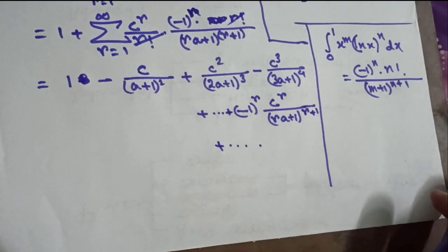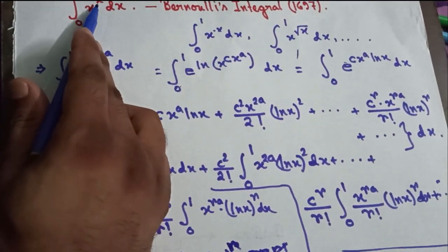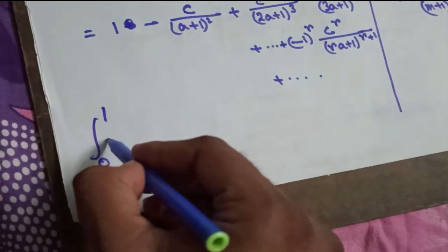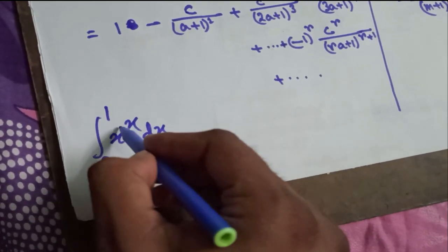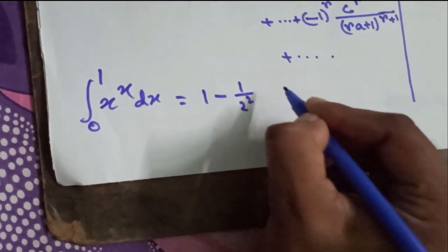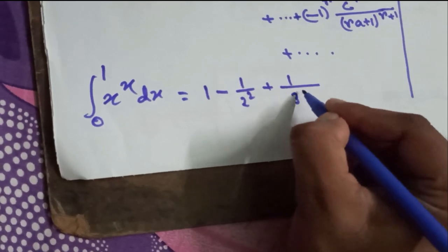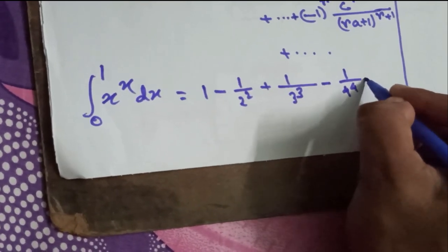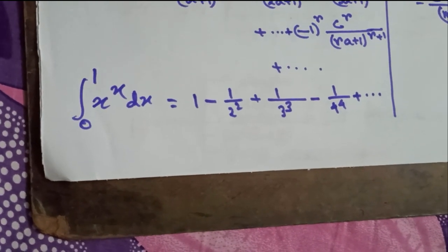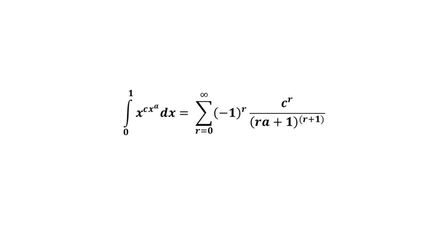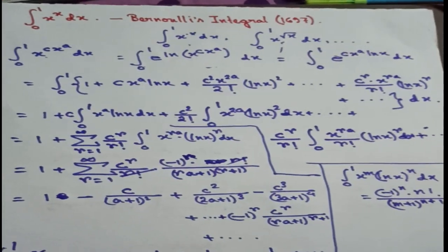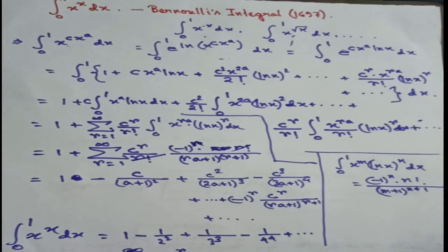For our desired integral from 0 to 1 of x^x dx, we set c = 1 and a = 1, giving: 1 − 1/2² + 1/3³ − 1/4⁴ + ... This is a beautifully elegant solution. Similarly, using this generalized formula, you can calculate the other cousin integrals by just adjusting c and a.